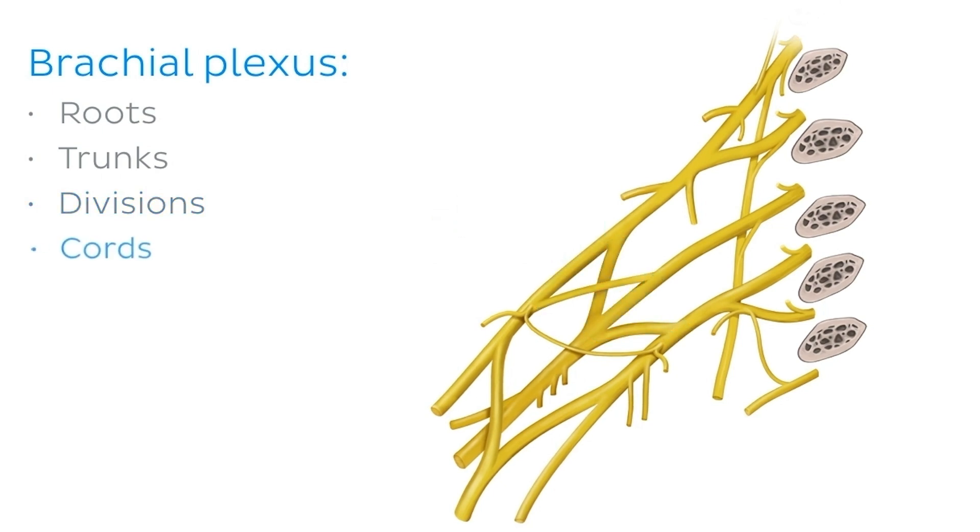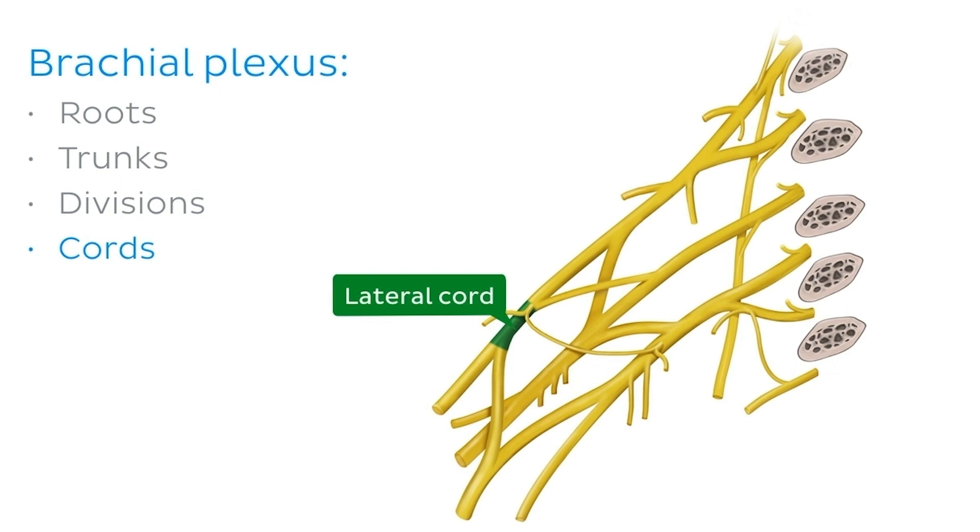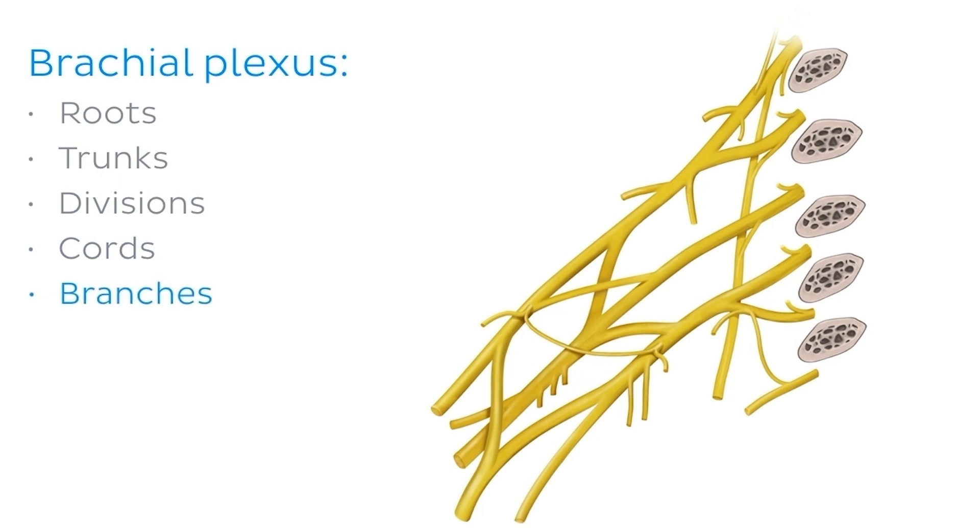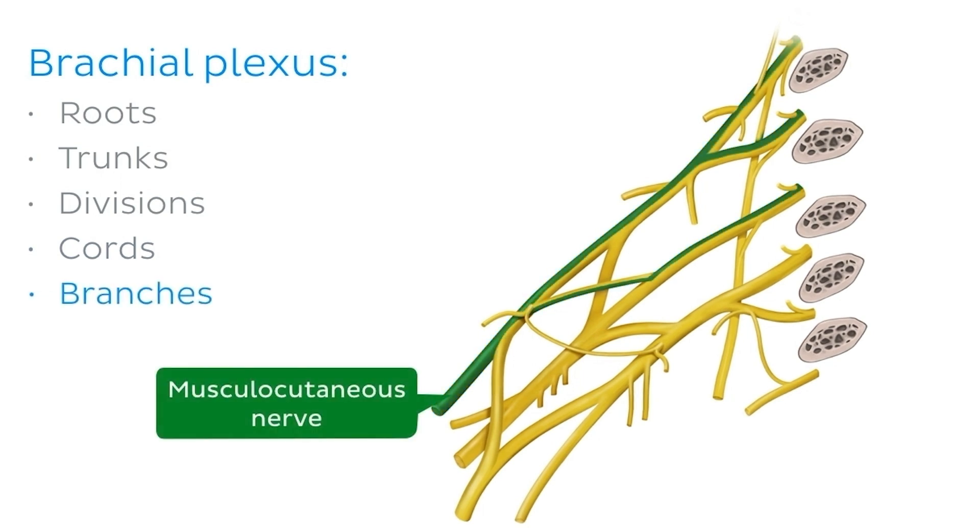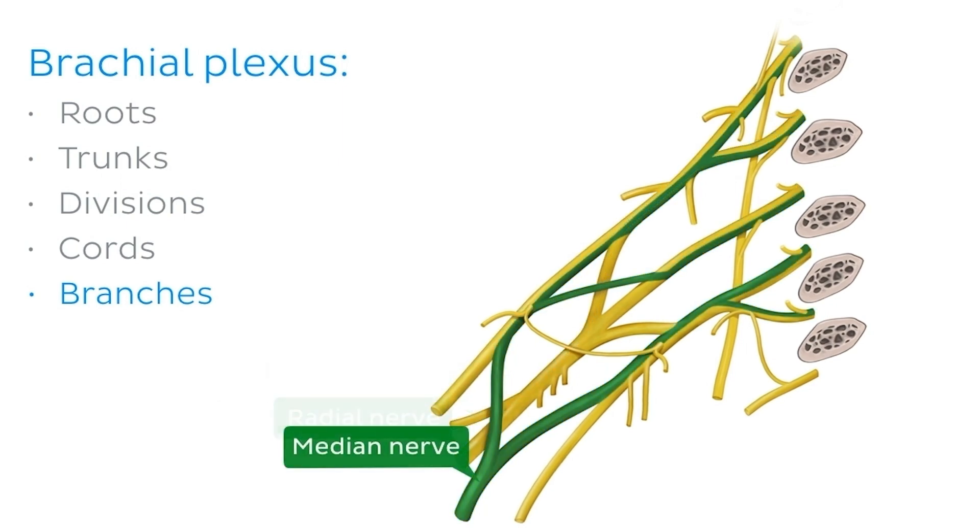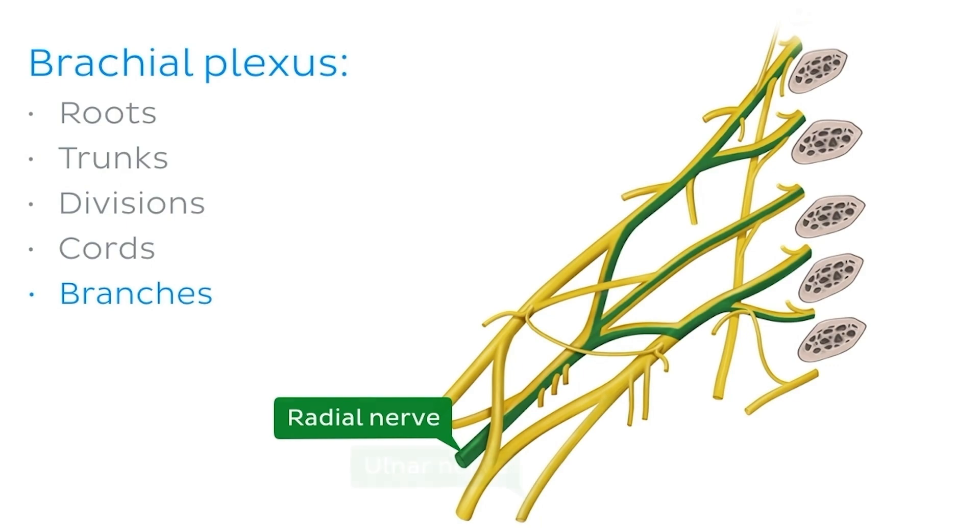And then three cords, a lateral cord, a medial cord, and a posterior cord. Before finally terminating in five primary branches, the musculocutaneous nerve, the axillary nerve, the median nerve, the radial nerve, and the ulnar nerve.